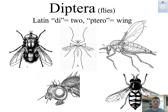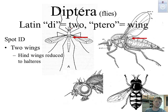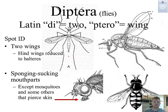Diptera — 'di' is two, 'pteron' means wing. We can see on our flies and mosquitoes we're only looking at two wings. Remember from the original characteristics of insects we talked about two sets of wings — they actually have a vestigial structure called halteres, which may have once been wings in the past and over time have adapted and no longer have use. Sponging mouth parts, or some have a piercing mouth part, like we know mosquitoes have.